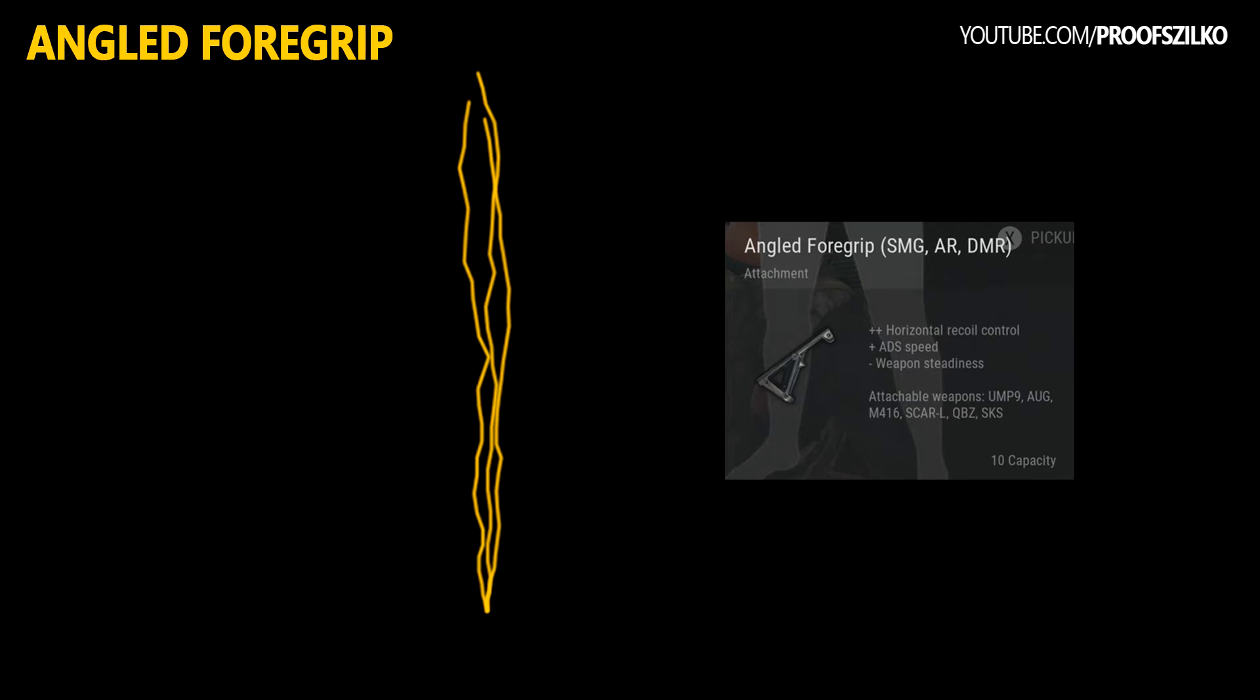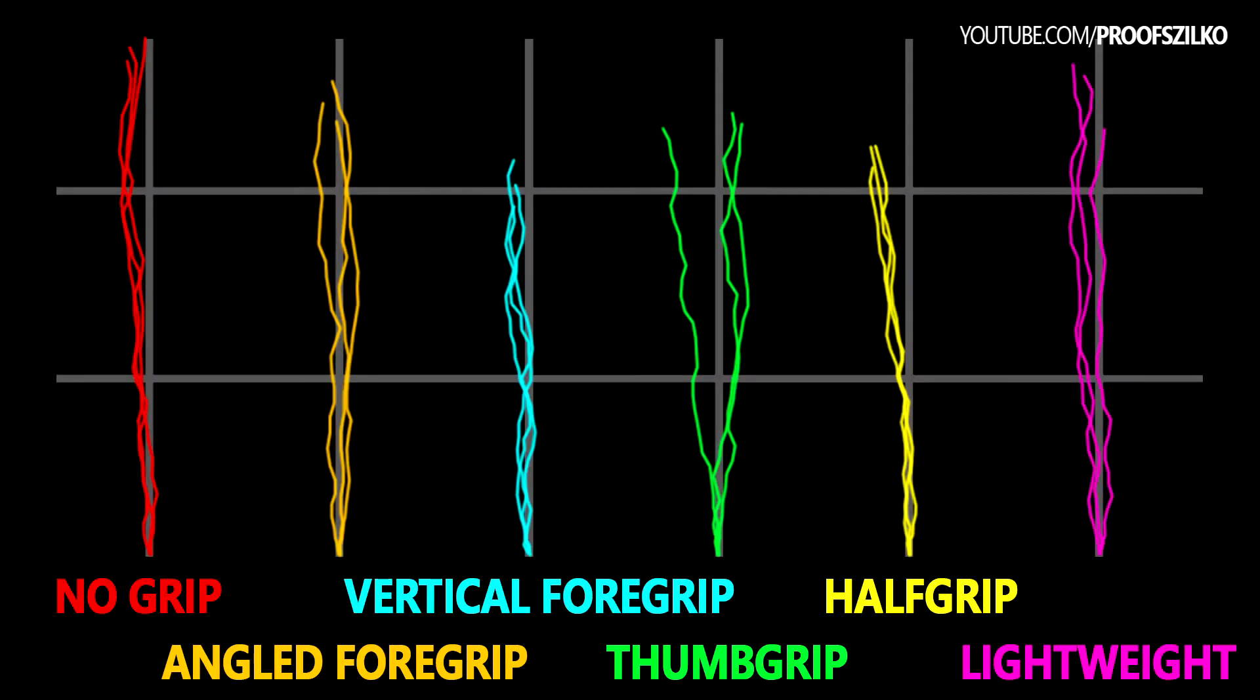So comparing all six spraying patterns to each other, in my opinion the half grip won the competition, but also the vertical foregrip is one of the best ones. All the others have either horizontal or vertical recoil, and in some cases the stock M416 is a viable option if you want a full auto spray.